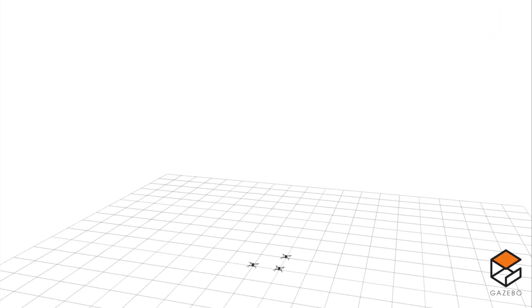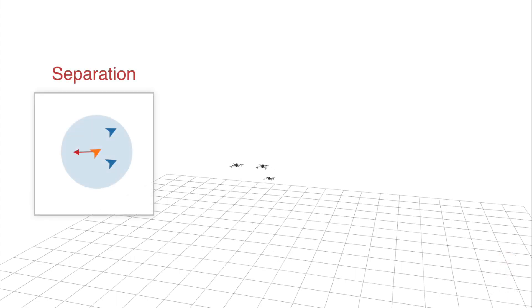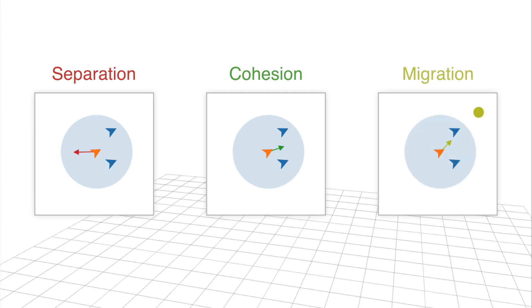Our visual controller learns by imitating a flocking algorithm that follows three simple rules. Separation steers nearby agents away from each other to prevent collisions. Cohesion steers agents to the swarm center so they stay together. Optionally, migration can steer the agents towards a navigation goal.